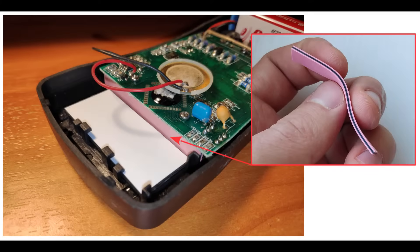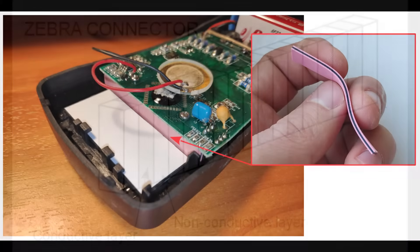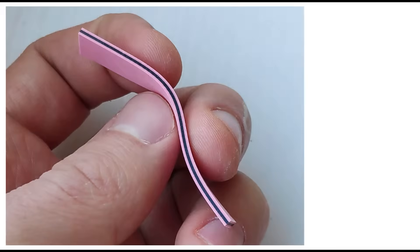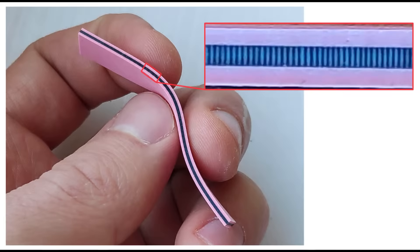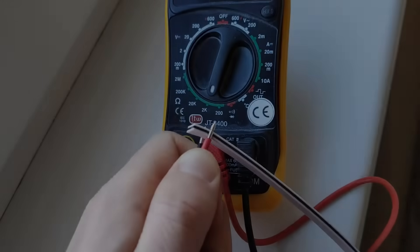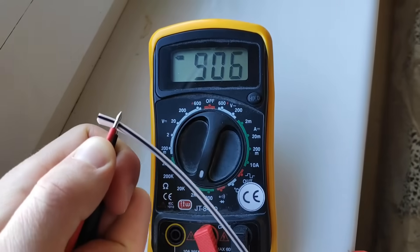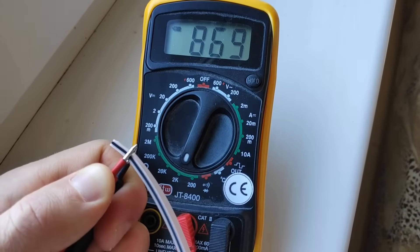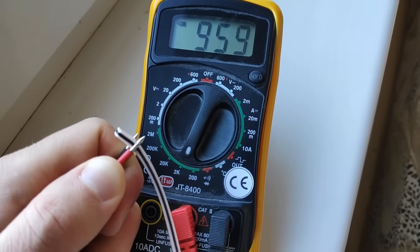The first way electrical connections are created is using a so-called zebra connector. Zebra connectors are usually rectangular-shaped connectors made out of a rubber-like material consisting of conductive and non-conductive layers. Here you can see one example of this kind of connector. If you zoom in on its surface you can see the small layers it's made of — basically like small wires separated by an isolating material. You can also measure the resistance of these conductive layers; the resistance is much higher than for a metallic conductor, but for LCD applications that's just fine.